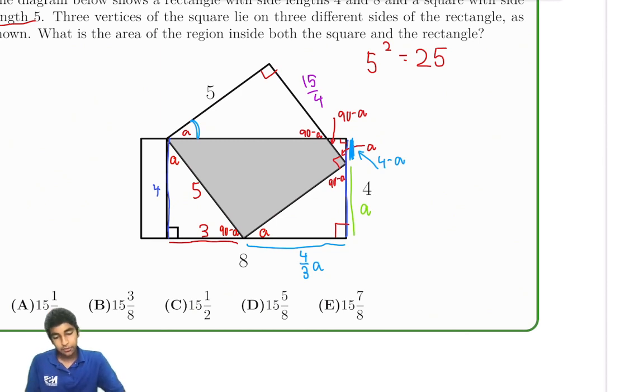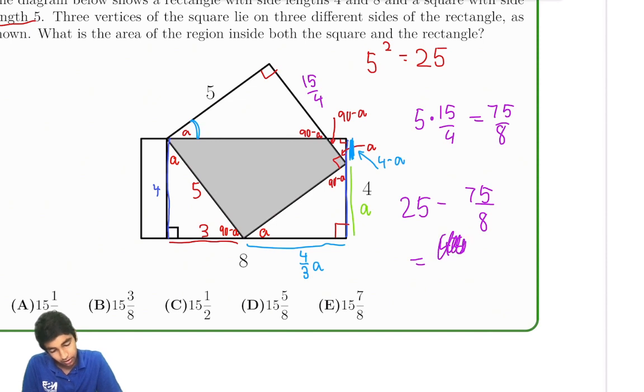So, that means the area of that triangle is 5 times 15 fourths, which is 75 fourths, and then we divide by 2 to get 75 eighths, because it's 1 half times that. So, 25 minus 75 over 8 equals 200 over 8 minus 75 over 8, which is 125 over 8, or 15 and 5 eighths. So, that is D.